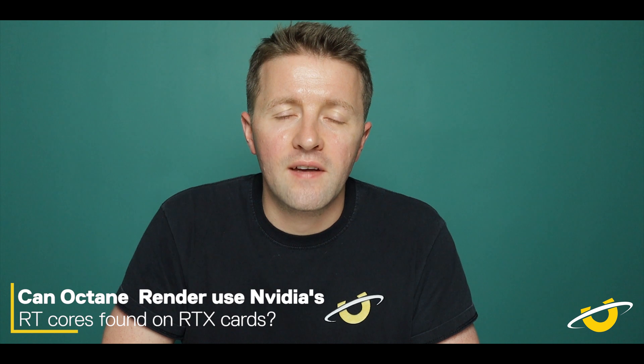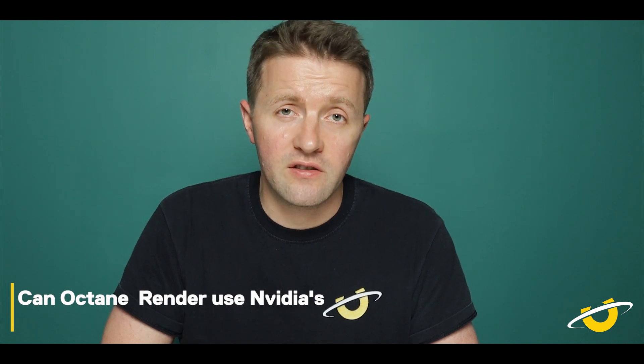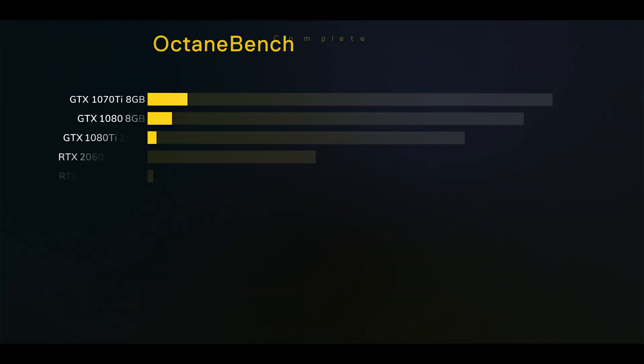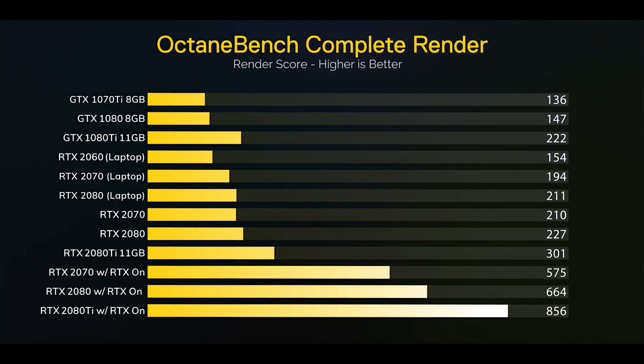Are the new RT cores making a big difference in Octane Render? Should you upgrade from, say, a GTX 1080 Ti to an RTX 2080 Ti? Yes — the RT cores are providing performance up to three times faster than the equivalent predecessor card. We're seeing massive performance increases. You can see the benchmarks we recorded at Utopia for yourself, but you definitely want to consider upgrading to RTX if you haven't already.